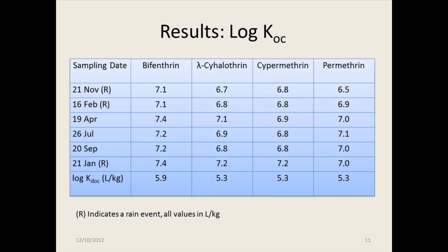These were the results, presented in log KOC format. The sampling dates are along the side and the log KDOC is along the bottom. The R indicates a rain event. Most noteworthy is that bifenthrin is consistently higher, and there is some variation within each chemical between the different sampling events. To determine what was causing that variation, we ran correlations with a whole range of plant operational parameters and meteorological parameters. It turned out that it correlated significantly with the amount of particulate surface area available in the sampling tube, so these appear to be at least partially surface-area driven.